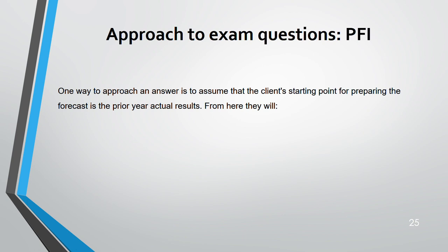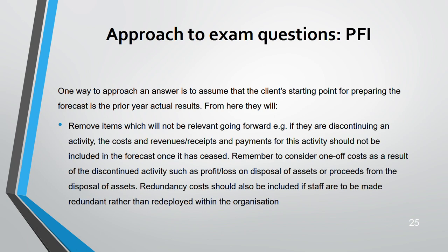One approach to a PFI question is to use the prior year actual results as the starting point for the forecast, which will be provided in the exam. From there, make adjustments — add or deduct items. If any item is not going forward into the future, remove it. For example, if you discontinue some activity, any cost or revenue from that activity should not be included in the forecast.